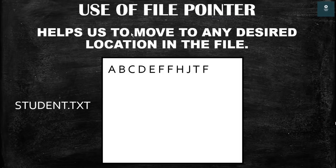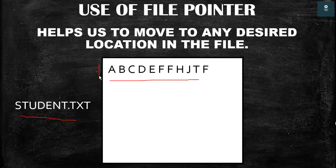For example, suppose we have a file called student.txt with some data inside. Initially when the file is opened, the pointer is at the zeroth location. When the file is opened in input mode we have a get pointer, and when opened in output mode we have a put pointer.